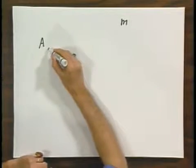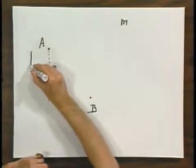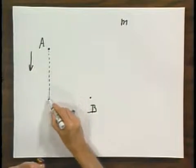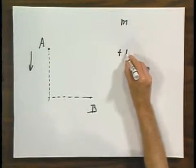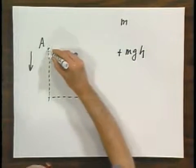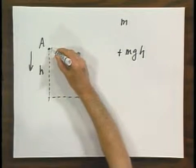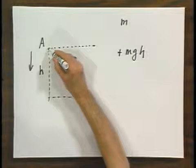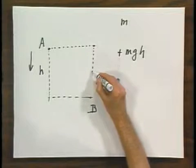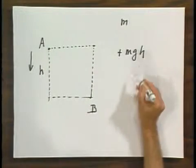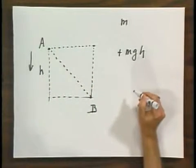If I go from A to B with that object, little m — I go vertically down, gravity is in this direction, and then I go horizontally — the work done by gravity will be plus mgh, if the vertical separation between A and B equals h. If I go this way, no work will be done by gravity moving horizontally, and then I go down, and the work done by gravity will be mgh. But if I go this way, the work done by gravity will also be plus mgh.